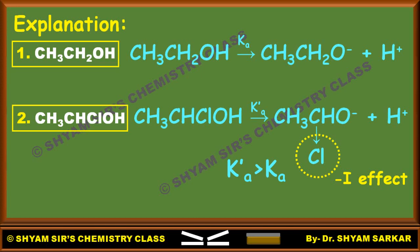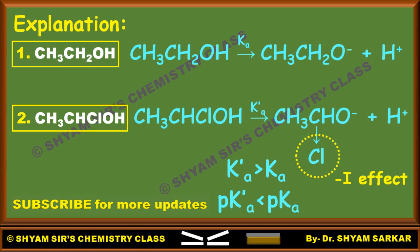Due to the presence of one Cl group at the C1 position with a minus-I effect, more H⁺ ions are released, so KA prime is much greater than KA. Since we know the reverse relation between pKa and KA, pKa prime will be less than pKa.